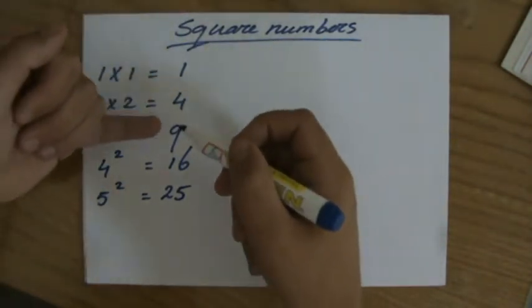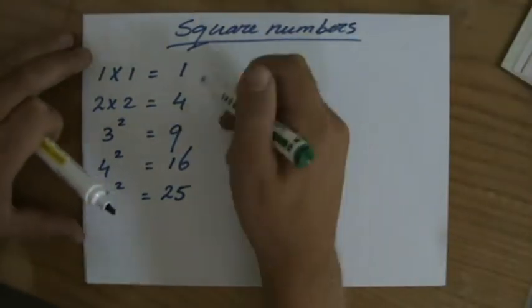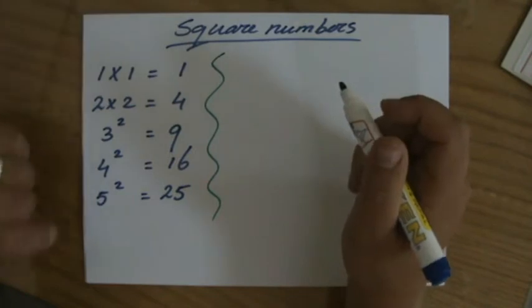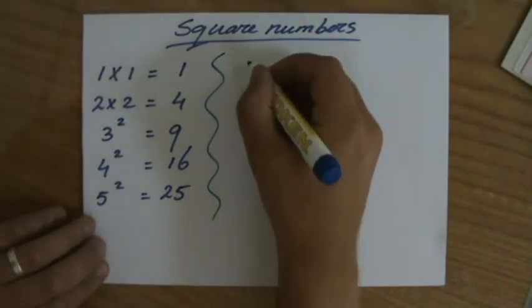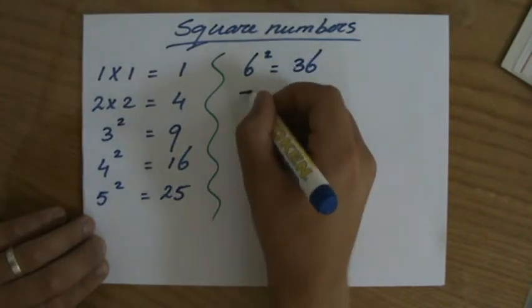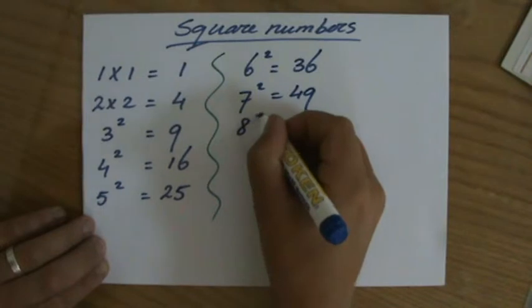1, 4, 9, 16, 25, those are all square numbers, but you do yourself a favor if you know them all up till 15. So let's write them down. 6 squared equals 36, 7 squared equals 49, 8 squared equals 64.